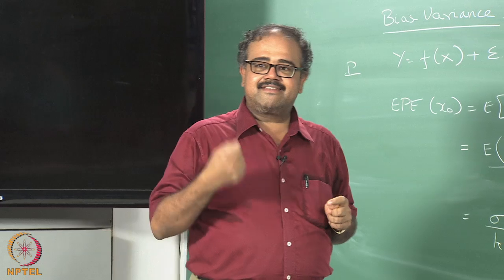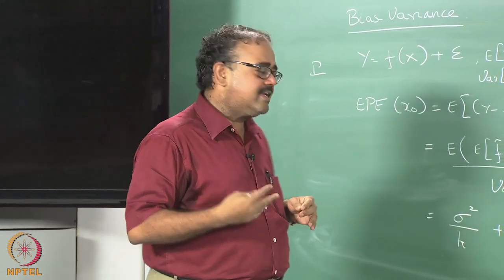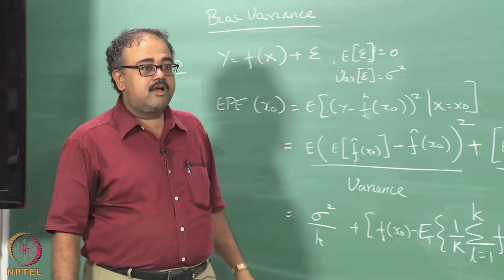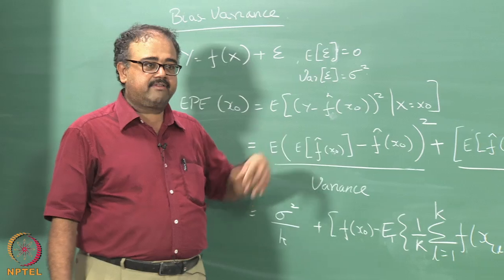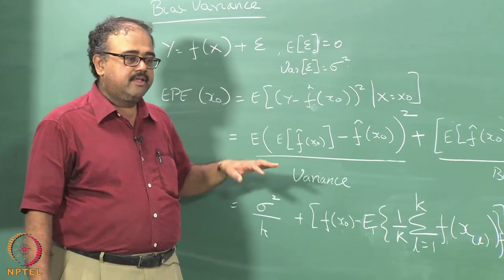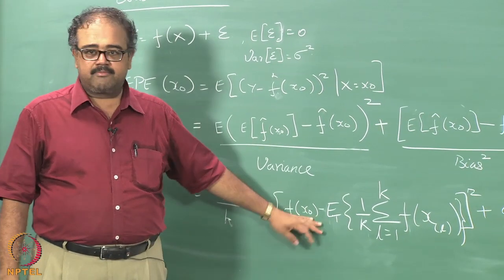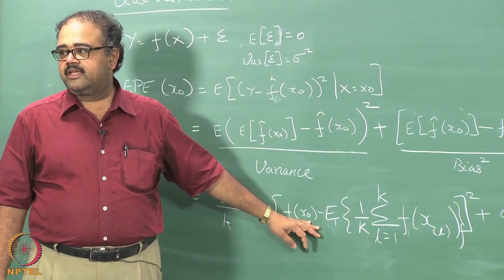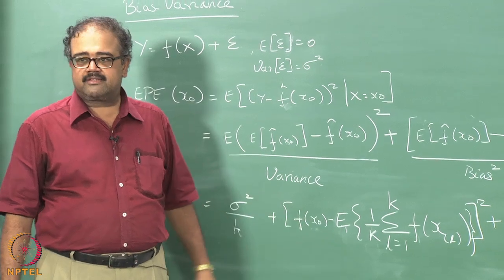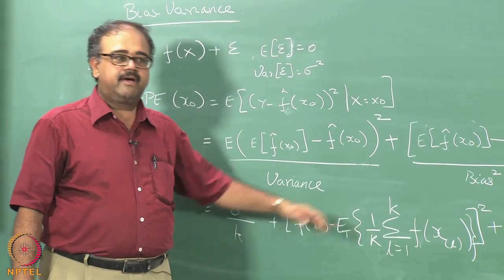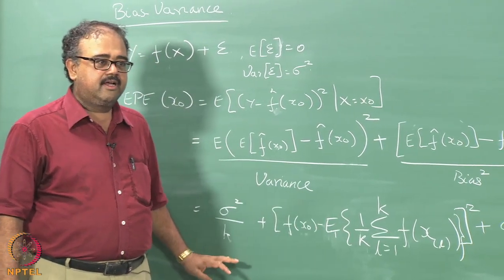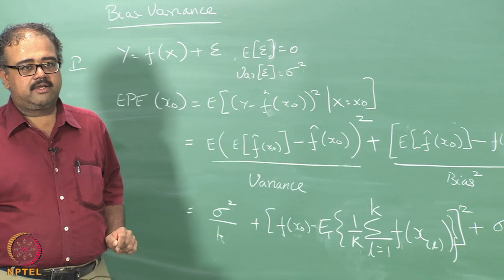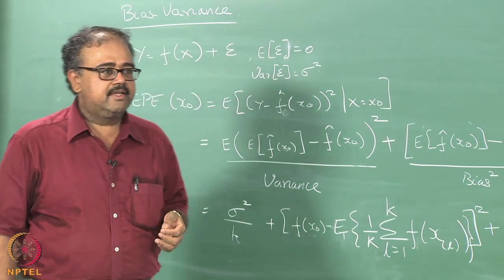So kind of counterintuitively, if I give you a large K, your function class typically becomes simpler because it has to have all these smoothness constraints. As K is smaller, your function class can be larger — your regressor or classifier is more complex if K is smaller, and less complex if K is larger. In general, if your classifier is more complex, your variance will be higher and your bias will be lower. If your classifier is less complex, your bias will be higher and your variance will be lower.